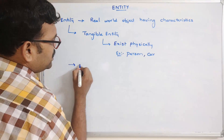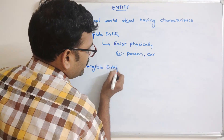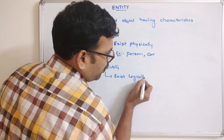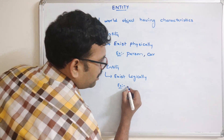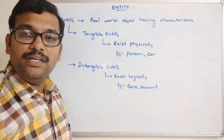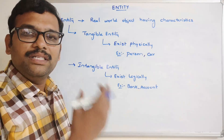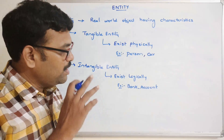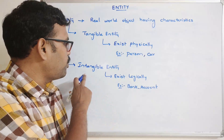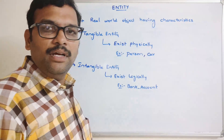The second category is an intangible entity. This is quite opposite to the tangible entity — these entities exist logically. For example, a bank account exists logically and has some properties like account number, ATM pin, IFSC code, etc. All these are attributes of the bank account. So an entity which exists logically with no physical existence is called an intangible entity.